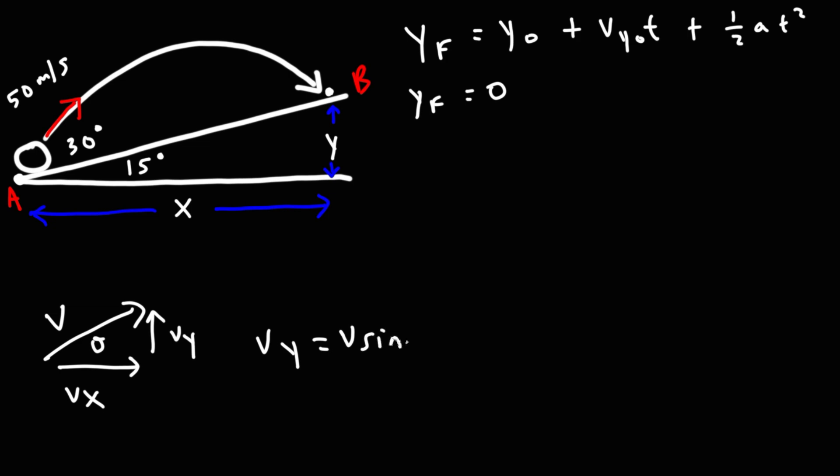Vy is v sine theta. Vx is v cosine theta. So vy initial is going to be v, which is 50 times sine of the angle, but this is going to be with respect to the x axis. So not 30, but 45 degrees and then times t plus 1 half the gravitational acceleration, which is going to be negative 9.8 and then times t squared. So now let's go ahead and simplify that. So we have 50 times sine 45. That's 35.355 t, half of 9.8. That's going to be negative 4.9 t squared. So now we have y in terms of t.